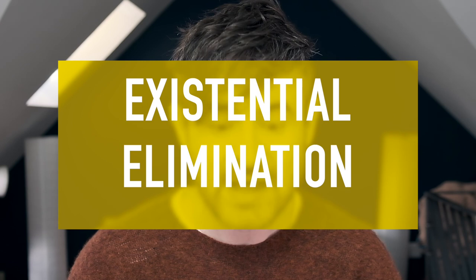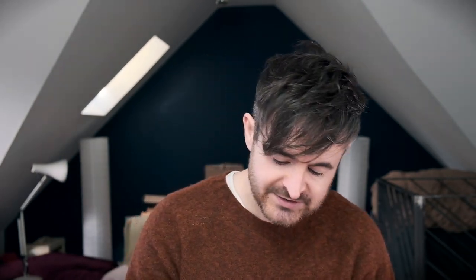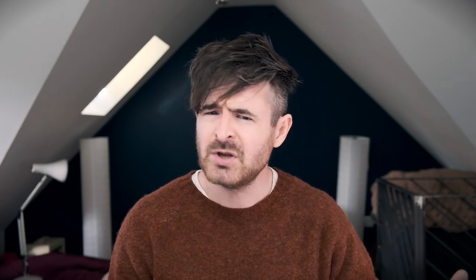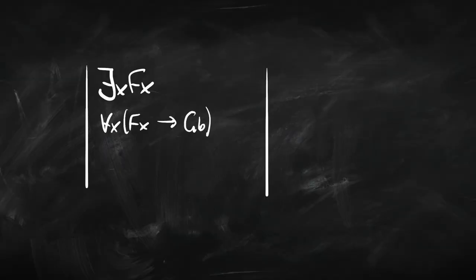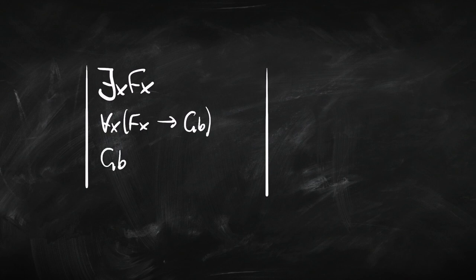The final rule is existential elimination. This one is also tricky — suppose we know that something is F, so somebody is happy, but we don't know who it is. We can't infer that it's me; we can't infer that it's you. How do we use this information in our proof? Suppose you also know that of everyone, if they're F then something else — say, if they're F then Bob is rich. Then you can infer Bob is rich.